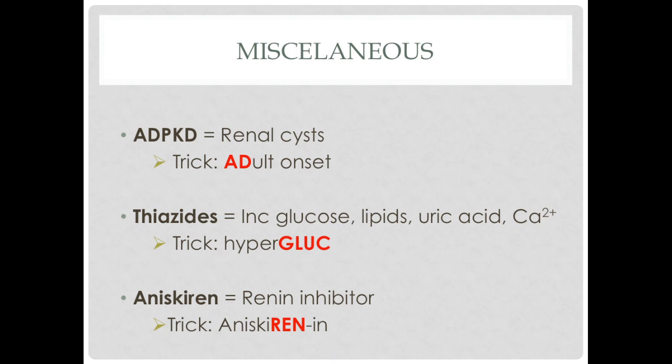Autosomal dominant polycystic kidney disease happens in adults, unlike autosomal recessive PKD, which happens in infants. To remember this, I take the AD for autosomal dominant and use it for 'adult onset.' Thiazide diuretics will, as a side effect, increase glucose, lipids, uric acid, and calcium — a good trick to remember this is 'HyperGLUC.' Aliskiren is going to be a renin inhibitor, and the way I remember this is I write down 'aliskiren-in,' and that tends to help.